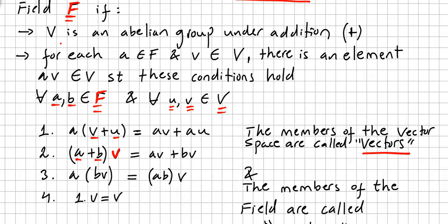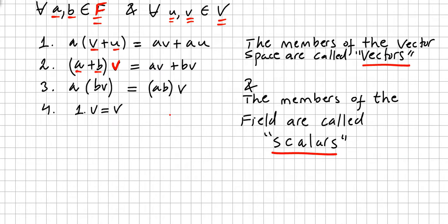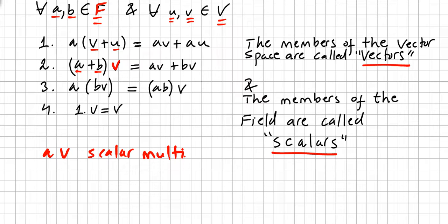Do not forget that V is not only a set but is an abelian group under addition. So if I have a scalar from the field A and I multiply A by V, a member from the vector space, we have here a scalar multiplication, because you are multiplying a vector V by a scalar.